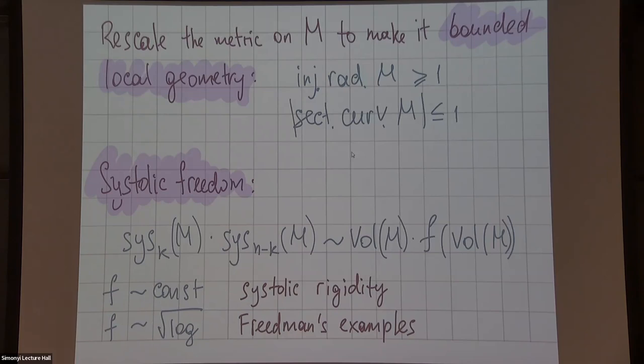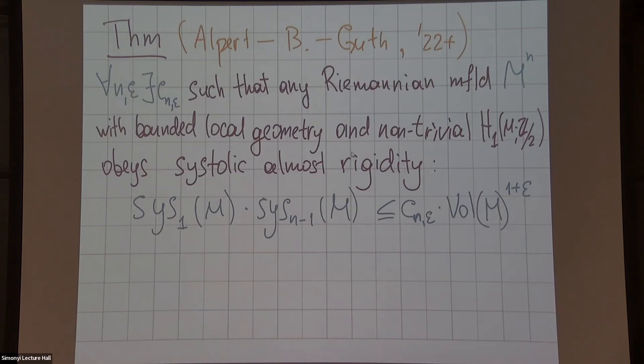If for your favorite family of examples you get f approximately constant, that means you have systolic rigidity, no systolic freedom. But in Friedman's examples you have root of log g, an additional factor. Here is the main theorem. It basically says that Friedman's examples are almost as free as possible.